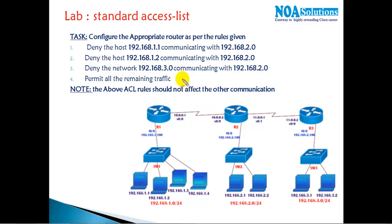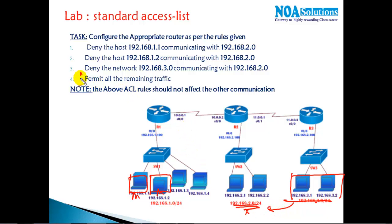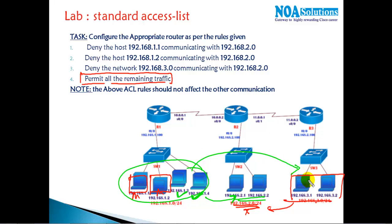Now, the manager has defined some rules. Once routing is set up and all users can communicate, I want to deny certain traffic: 1.1 should not communicate with the 2.x network, 1.2 should not communicate with 2.x, and the complete 3.x network should not communicate with 2.x. All remaining traffic — like 1.3 and 1.4 — is permitted.